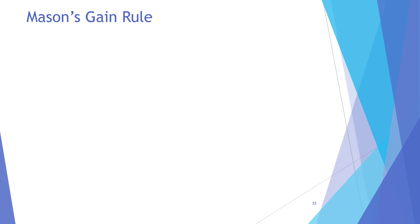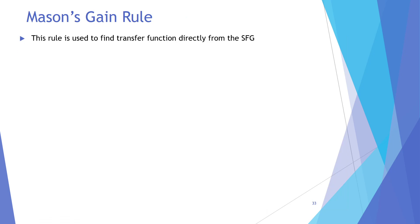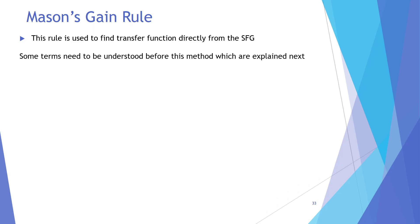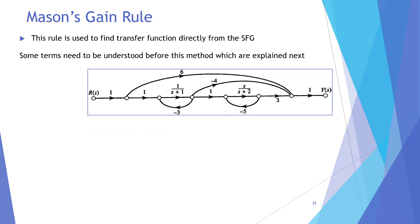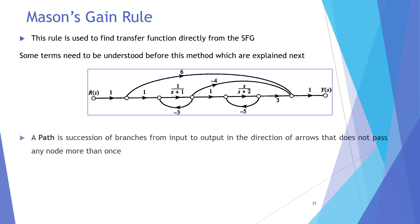Mason's Gain Rule is used to find the transfer function directly from the signal flow graph. Before applying Mason's Gain Rule to a signal flow graph, kuch terms ko understand karna zaroori hai. So ab hum dekhenge ke woh terms kya kya hain. First hum baat karte hain concept ki — that is the Path.